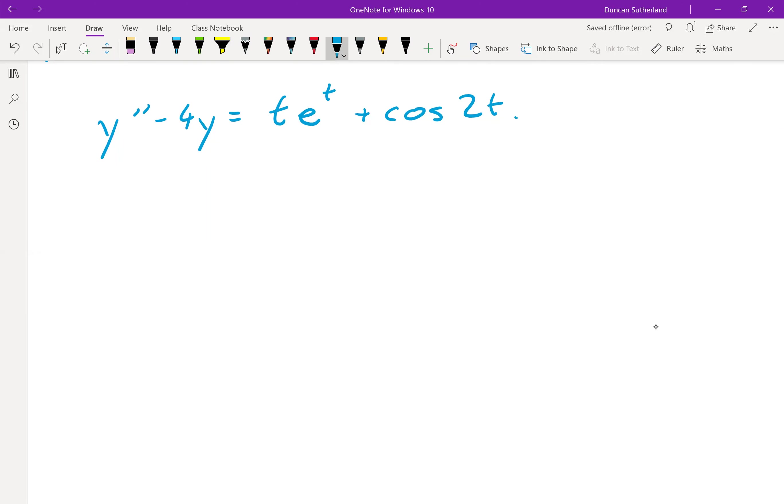Alright, this is a pretty complicated example of a second order linear constant coefficient inhomogeneous ODE. The right hand side not only involves a product of two functions, but it also involves a sum. So we're going to have to work out what we do with that.